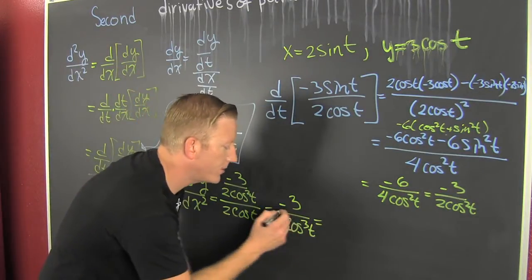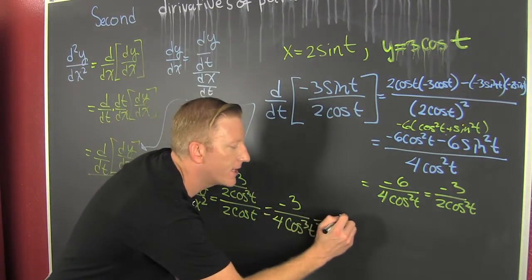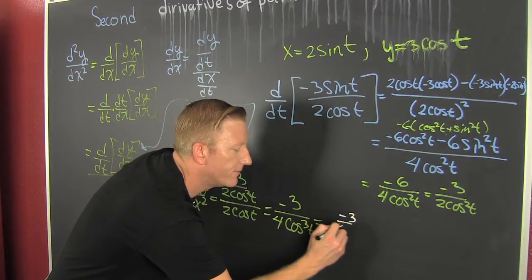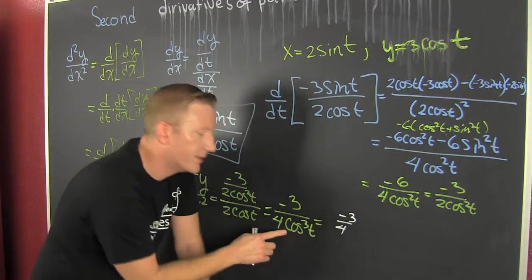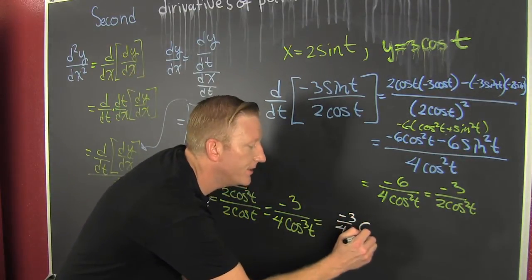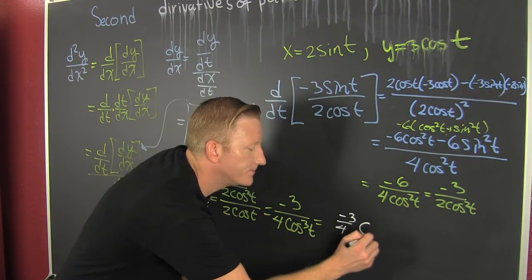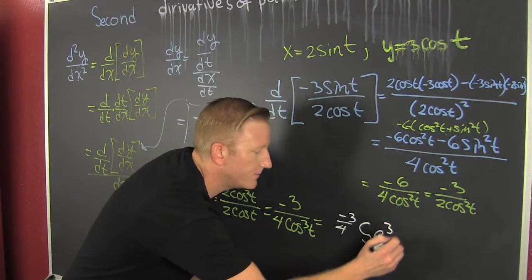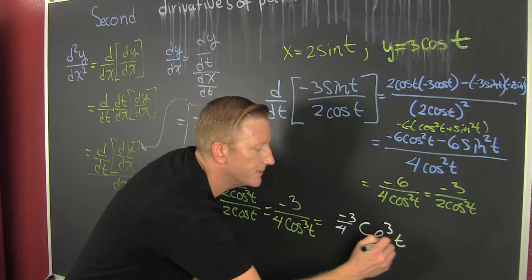Let's cap it up and call that minus 3 fourths times secant cubed t.